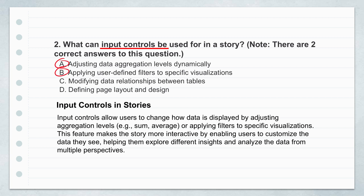Let's look at A, adjusting data aggregation levels dynamically. Imagine you're looking at sales figures — at first you might see total revenue for the whole year, but what if you want to quickly switch to see the average sales per month, or the total number of units sold? Input controls let the person using the story switch between those different summaries — sum, average, count, all that. You don't need the designer to create separate reports. It gives users a ton of flexibility to explore the data from different angles, giving them the power to decide how they want to summarize the data.